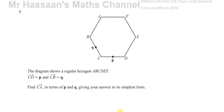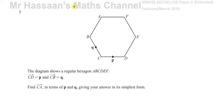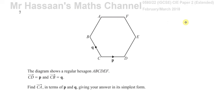Welcome back, this is Mr. Hassan's Maths channel. I'm now answering question number 7 from the February/March 2018 international GCSE (IGCSE) Cambridge paper 2, variant 2. This question is about a regular hexagon ABCDEF and these vectors p and q, where p is from C to D and q is from C to B. When we have regular hexagons there are certain properties we should know about which will help us when dealing with vectors.